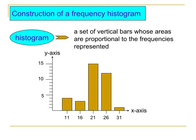A histogram is a graphical presentation of your dataset. It is a set of vertical bars whose areas are proportional to the frequencies represented. The Y-axis shows your frequencies and the X-axis shows your class marks, which are the averages of the class intervals.